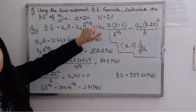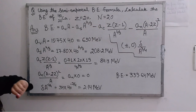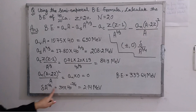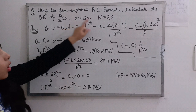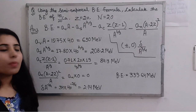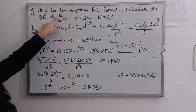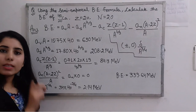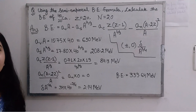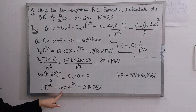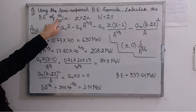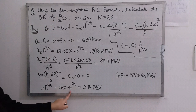Since both the number of protons and neutrons are even (both are 20), we have the even-even case. The corresponding delta value we have considered is 34. So when we find the pairing energy, delta will be 34. The total number of nucleons A is 40, Z is 20, and N is 20. For the first case of even-even-even, delta's value is 34, and that is why we are considering 34 here.